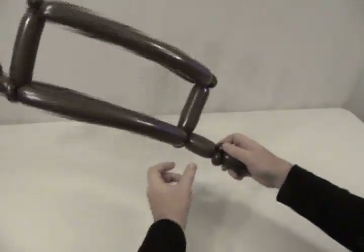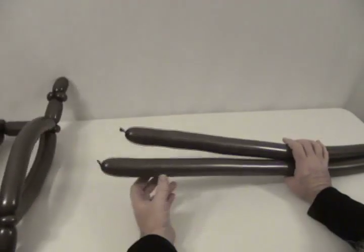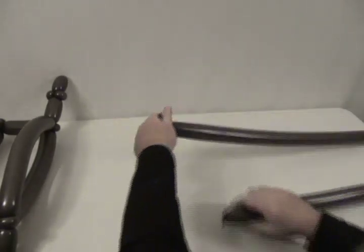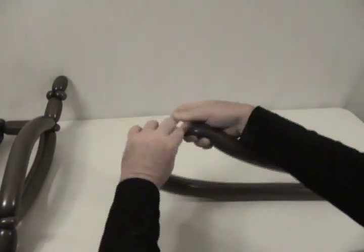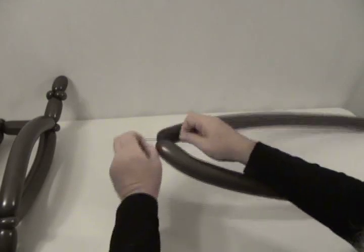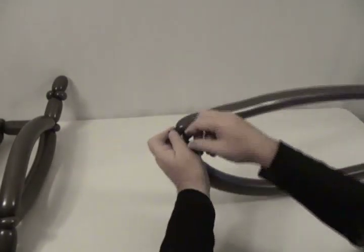And again, I'm going to leave that for the moment. Now we're going to take our other two 260s, and I'm going to tie them together. I'm going to take the nozzle end of one and tie it to the nipple end of the other. Just like that. And then go to the other end. Do the same thing.